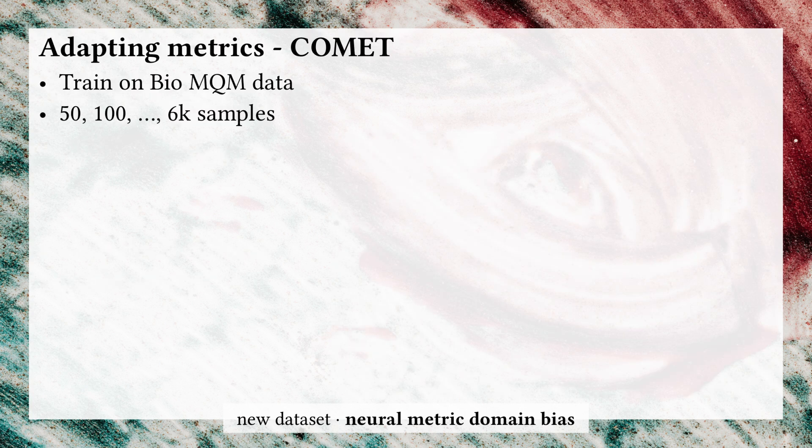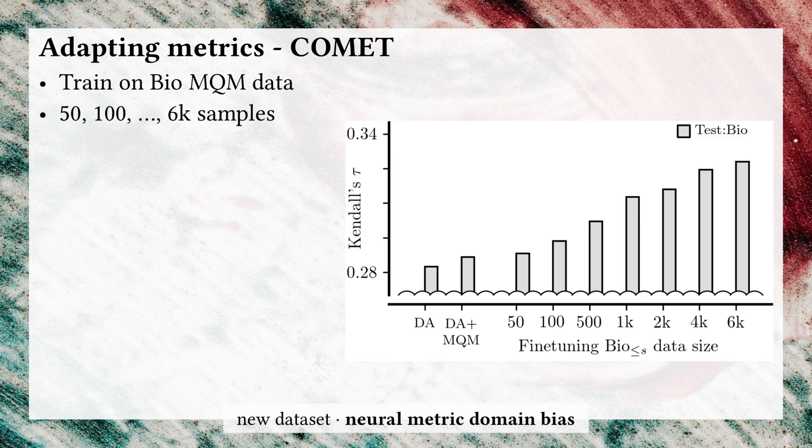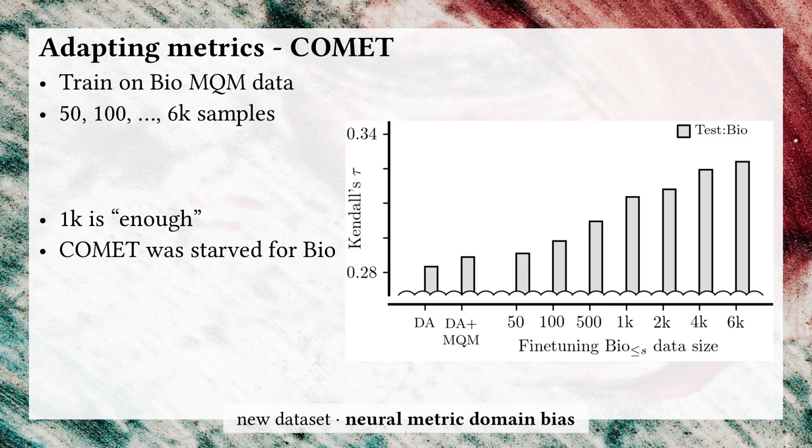To further convince you, we can take another perspective. What if we also train the COMET metric on human quality judgments on the biomedical domain? The more data we give it, the better it does on this domain. In fact, performance improves abruptly with just 1,000 examples, which is surprisingly low. This leads us to conclude that the model was starved for data from this domain.